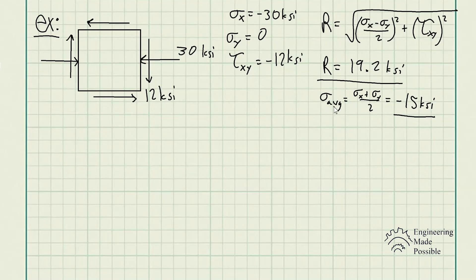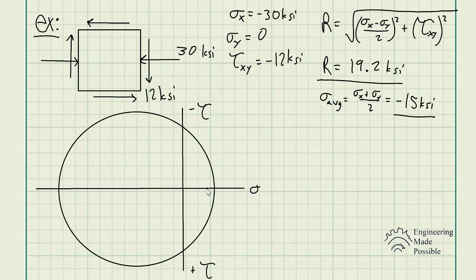Now with the average normal stress, we're able to identify the location of the center of Mohr's circle. And then with the radius, we're able to draw out Mohr's circle. Let's go ahead and graph it. Drawing the axes, keep in mind the normal stress here is along the horizontal, and the shear stress is going to be positive going downward and negative going upward. We see that the average normal stress is negative 15, so it's going to be on the negative side. This is negative 15 KSI, so this is where the center of Mohr's circle is going to be from the vertical axis.